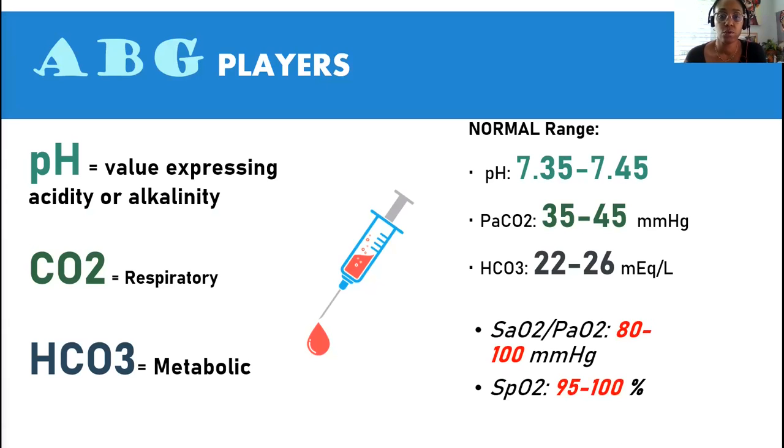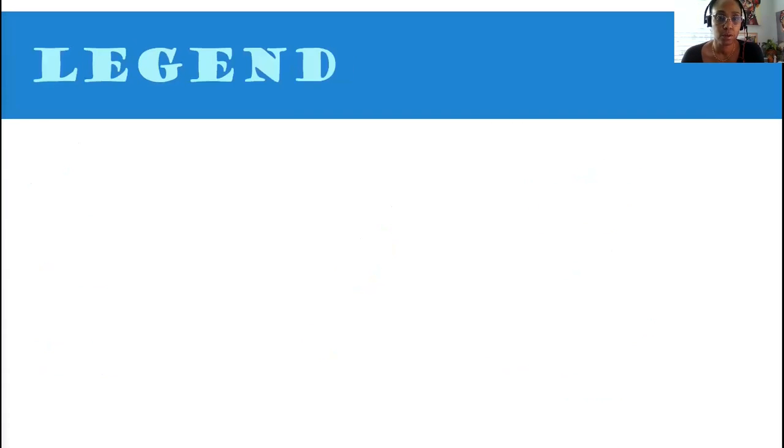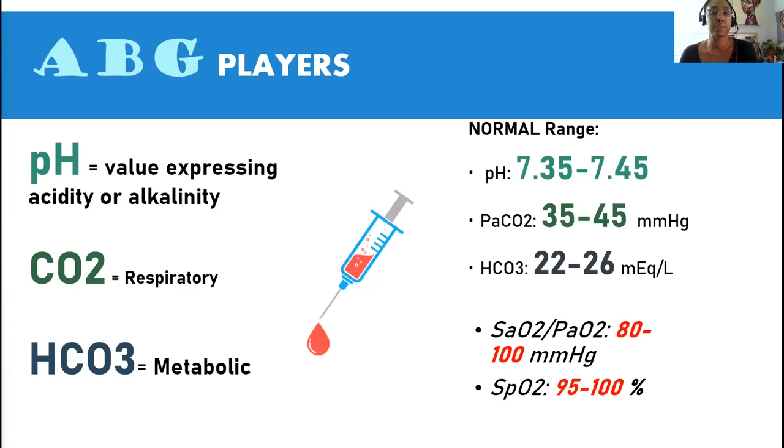35 to 45 for CO2 and HCO3 or bicarb is 22 to 26. If you can't remember bicarb, I try to remember is the age I would want to live forever. Between 22 and 26, you'll remember the range for normal bicarb. And then we have SAO2, which is our oxygen saturation or PaO2 between 80 and 100. Your SpO2, which is measured by your pulse oximeter, is between 95 and 100. All these components are critical to get a good picture of the patient.